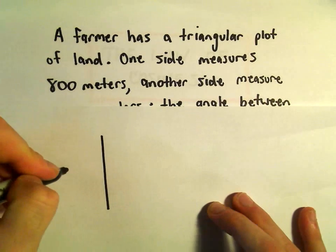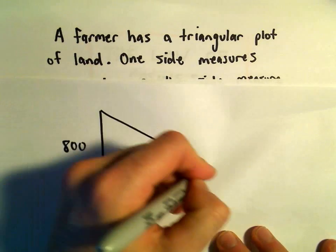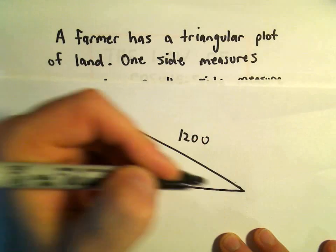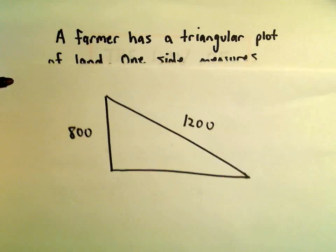One side has length 800 meters. The other is 1,200 meters. The angle between those two sides is 57 degrees.